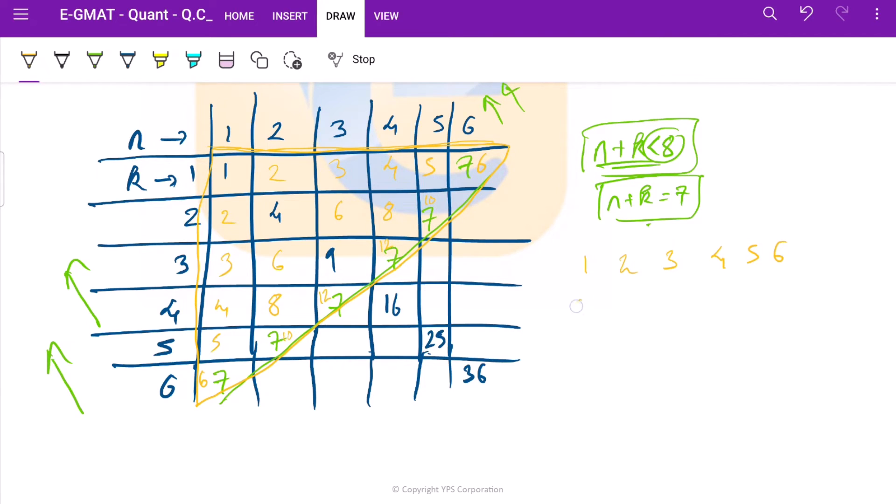Then we do not get a 7. We get an 8. Then we have a 9 here. Then we have a 10 here. Do we have 11? No, we do not have 11. Then we have 12 here. So basically, we have a total of 4 plus 2, 6 plus 4. 10 different values are possible for the product.